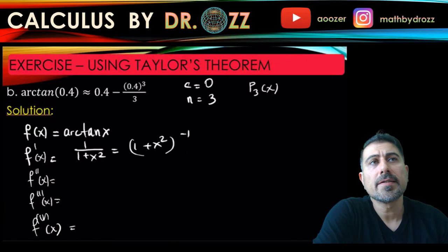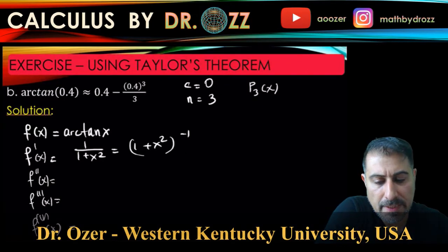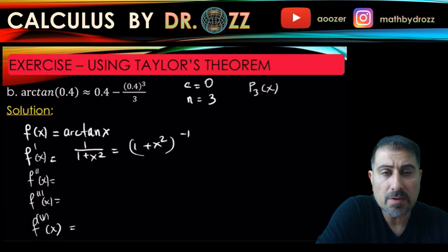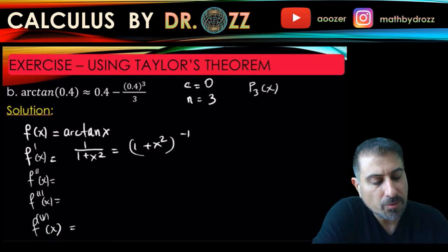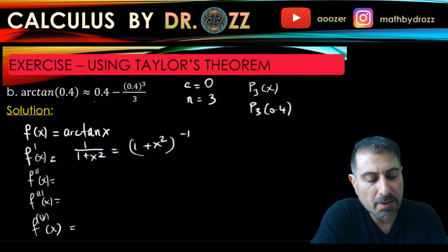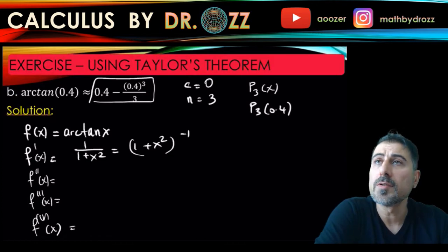Alright, so we're applying the same strategy for this problem. To start with, we take f(x) to be arctan(x), and c equals 0, n equals 3. We're interested in finding p3 of x, and hopefully p3 of 0.4 is going to be what this term is.